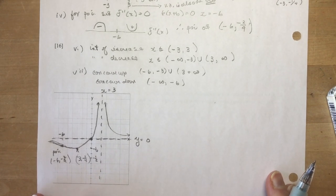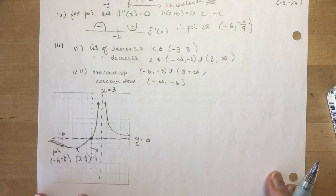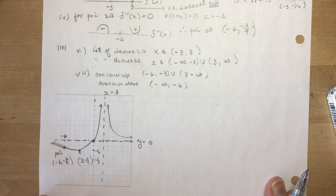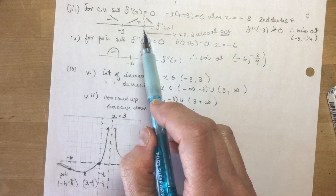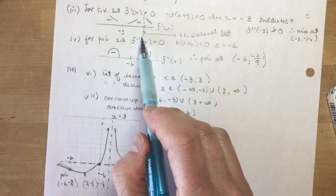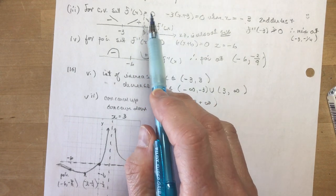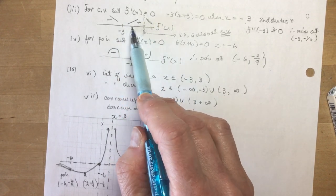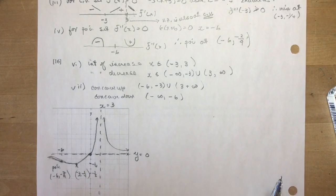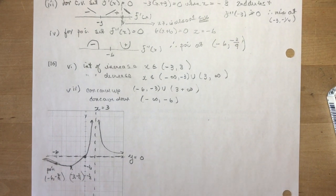That completes the 16-mark graphing question. Remember: always include the vertical asymptote as a critical value when finding intervals of increase and decrease — don't miss what happens on both sides of it. Good luck on your test. You only have one more chapter left in calculus, so congratulations and all the best.